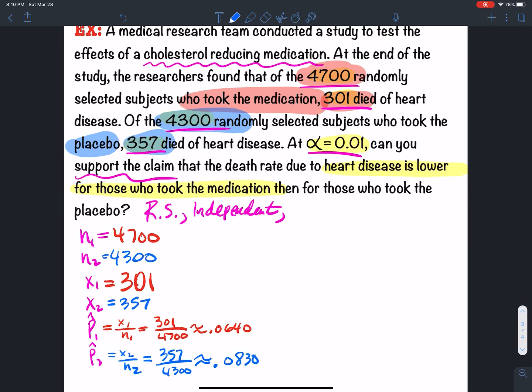Now, we need to figure out what P bar is, and then we can get Q bar. It's all the successes, all the deaths over all the people in the study.